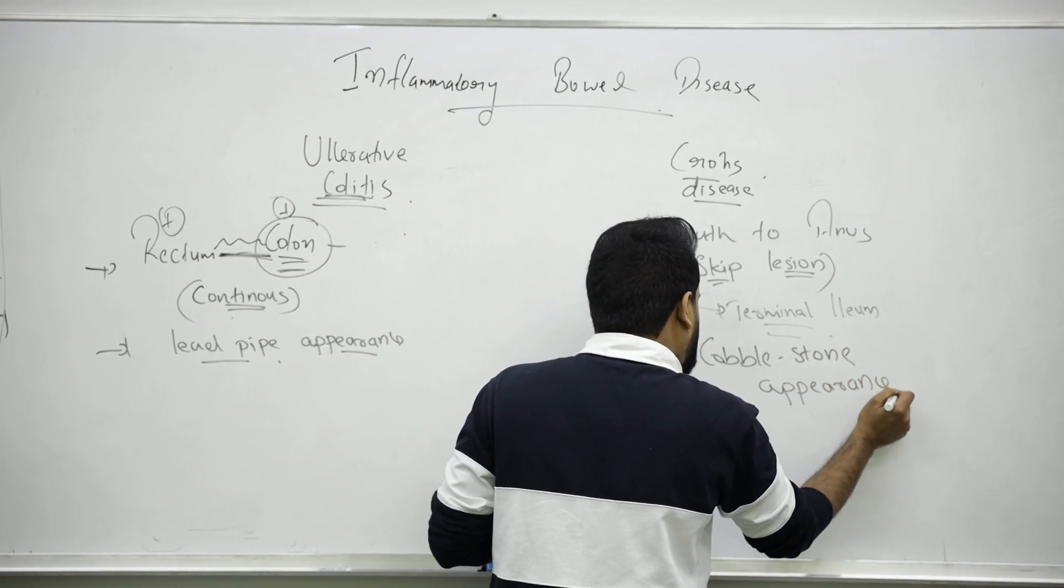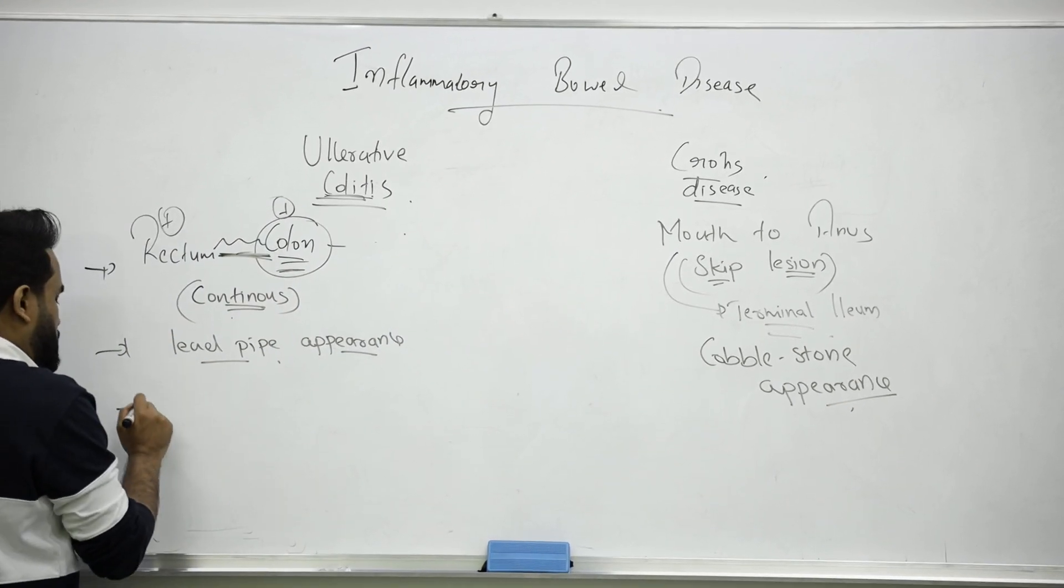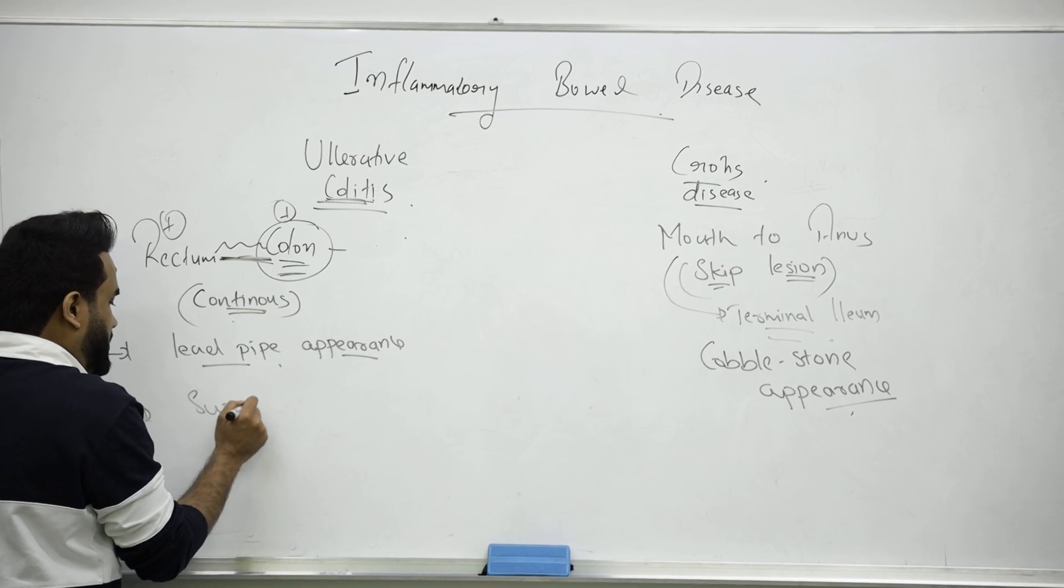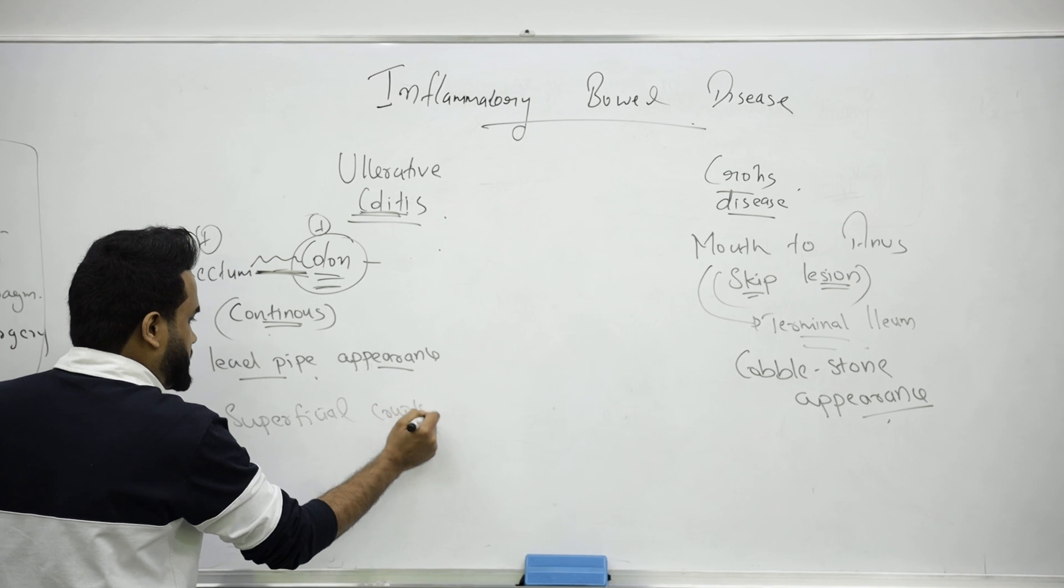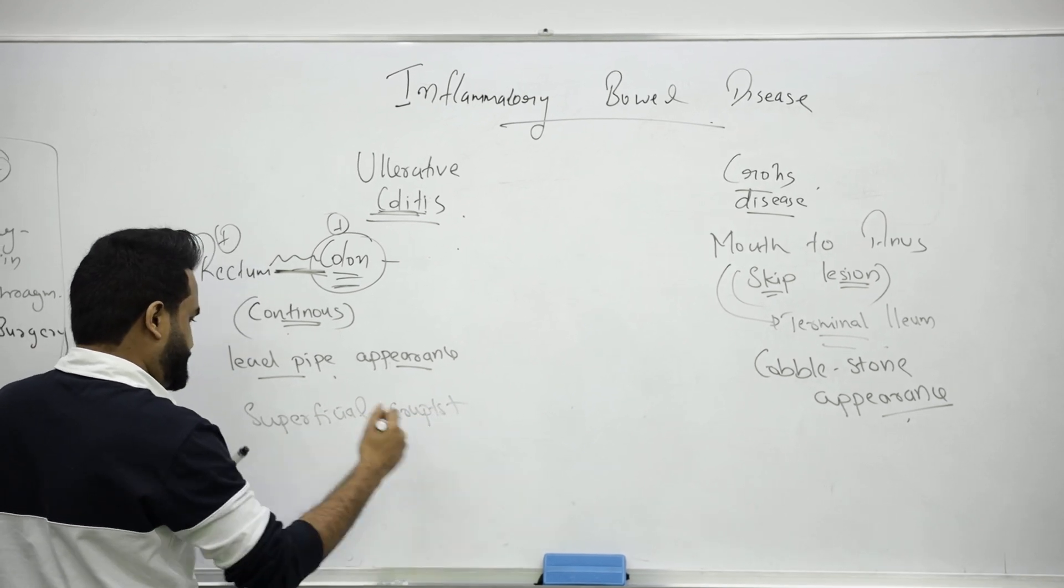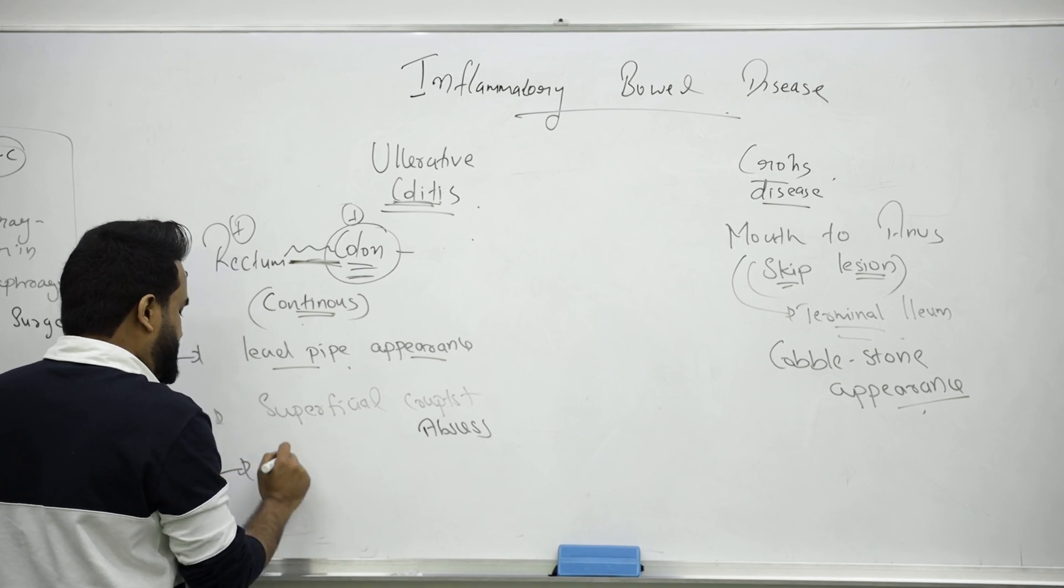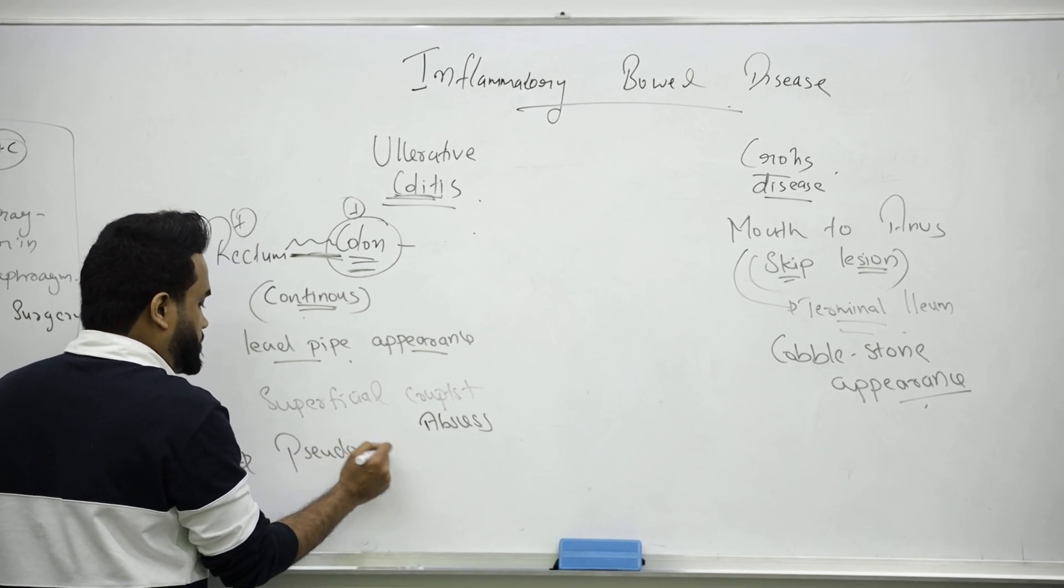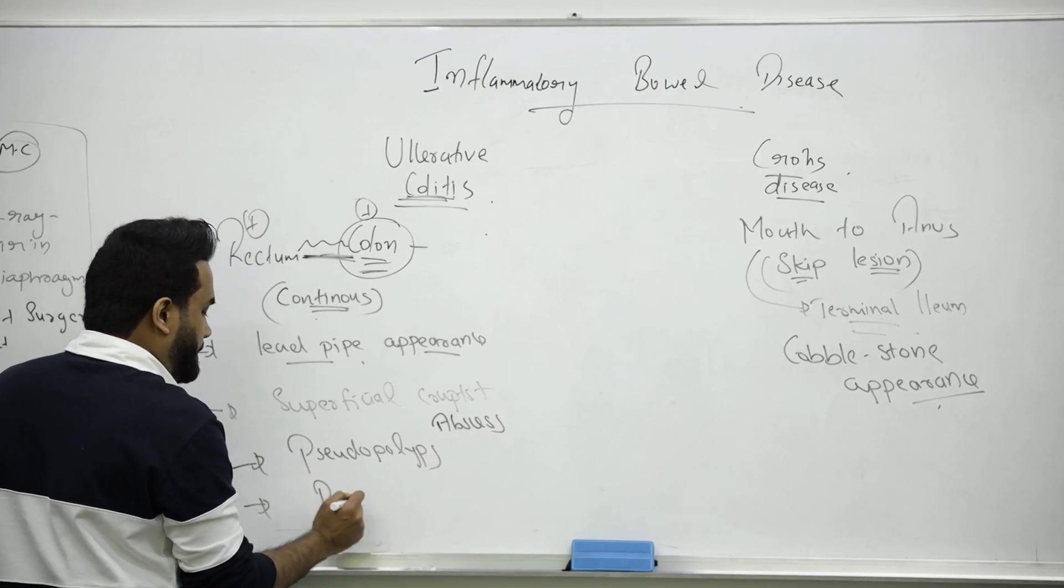Talking about ulcerative colitis, they will form some superficial crypts and abscesses. The main thing is pseudo polyps form - pseudo means false. Pseudo polyps. Never forget, they will cause you bloody diarrhea.